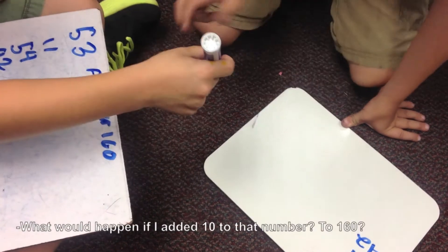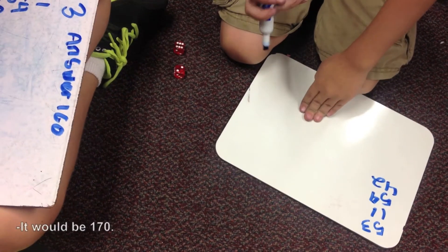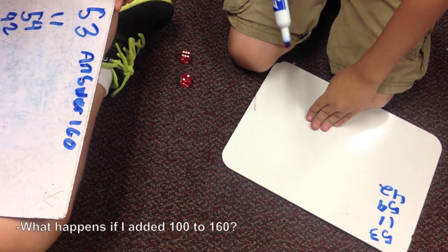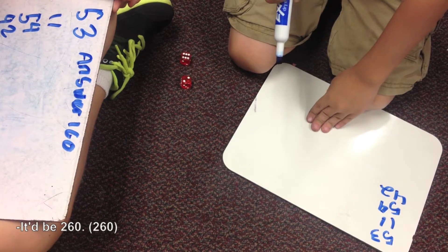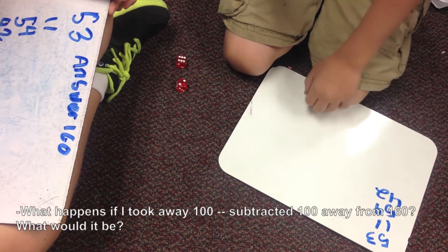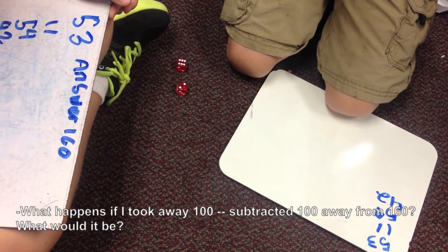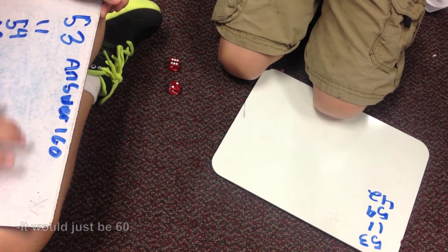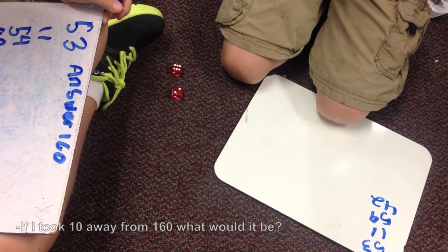What would happen if I added 10 to that number, to 160? It would be 170. What would happen if I added 100 to 160? It would be 260. What would happen if I took away 100, subtracted 100 away from 160? It would just be 60. If I took 10 away from 160, what would it be? 150.